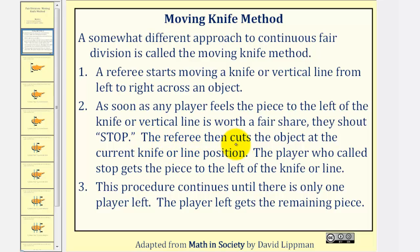they shout stop. The referee then cuts the object at the current knife or line position. The player who called stop gets the piece to the left of the knife or line.